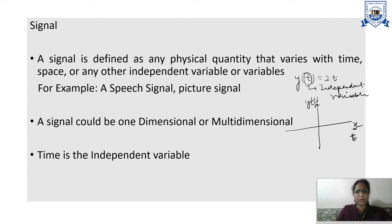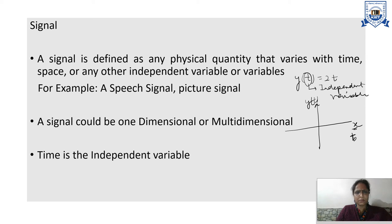A signal can be considered as a one-dimensional signal or a multi-dimensional signal. One-dimensional means it is a function of only one variable. If it is a function of more than one variable then it is called a multi-dimensional signal. For example, a picture signal could be multi-dimensional because the brightness of a picture depends on intensity, contrast, and many more variables. In this course, time will be considered as the independent variable.